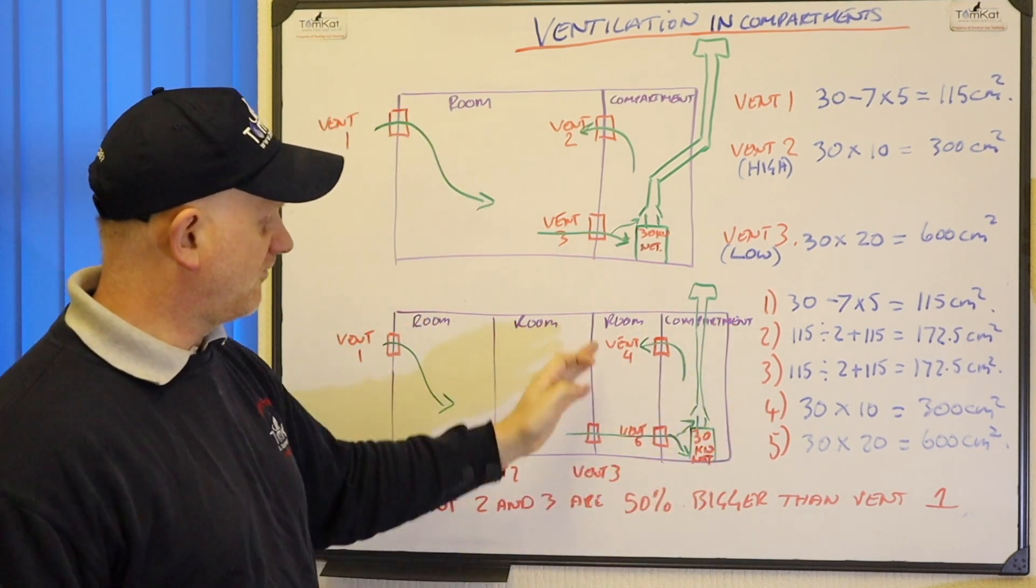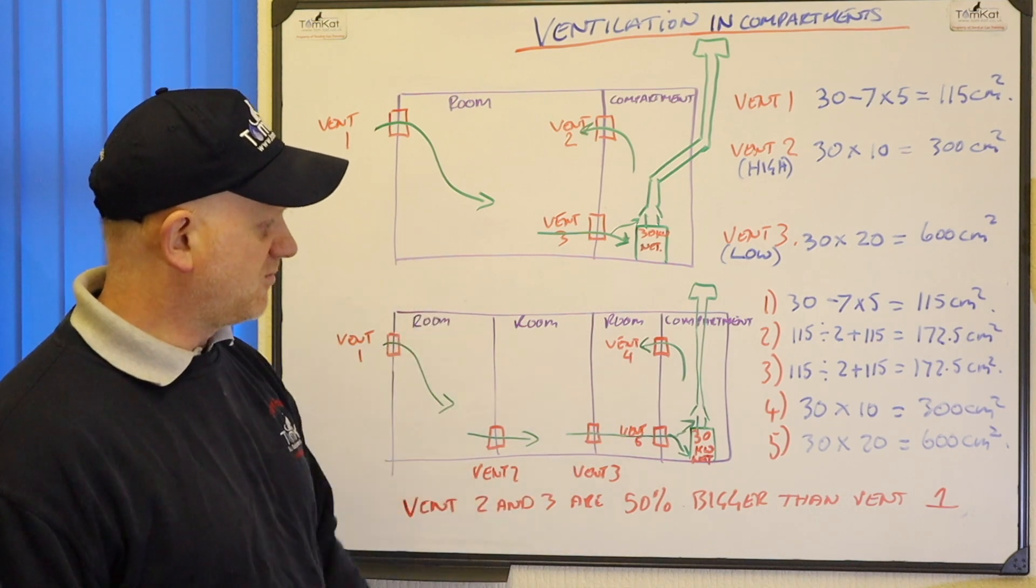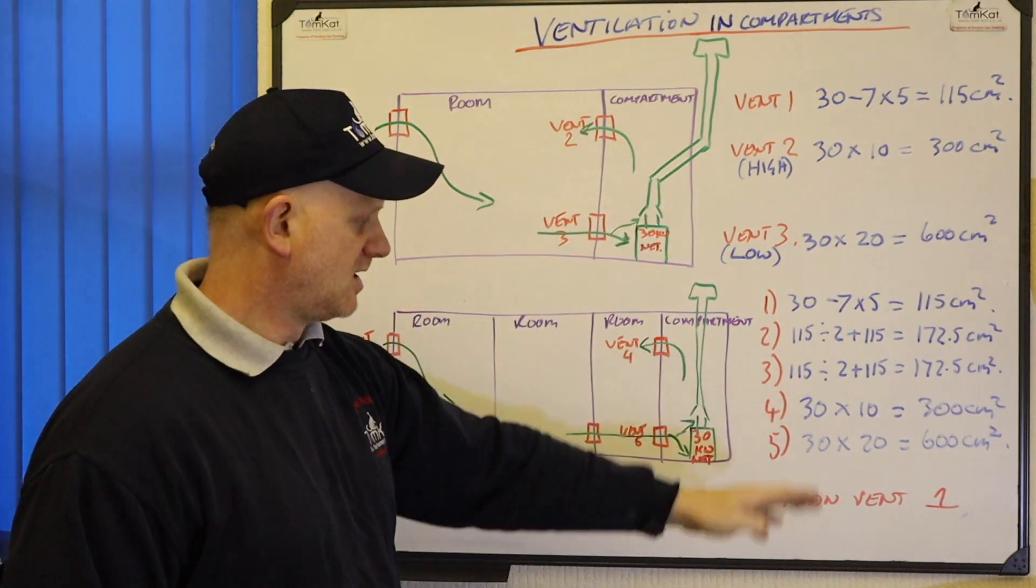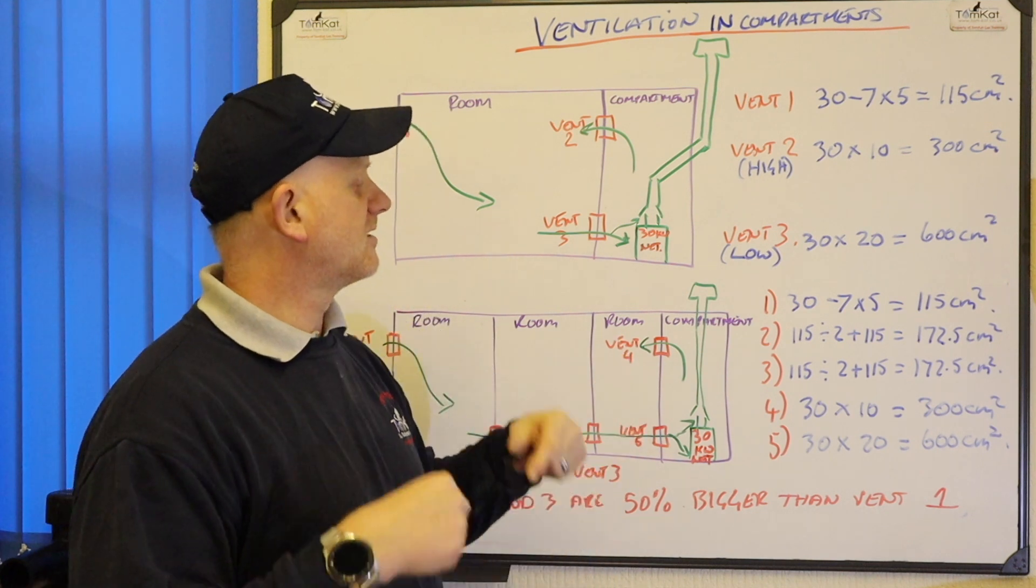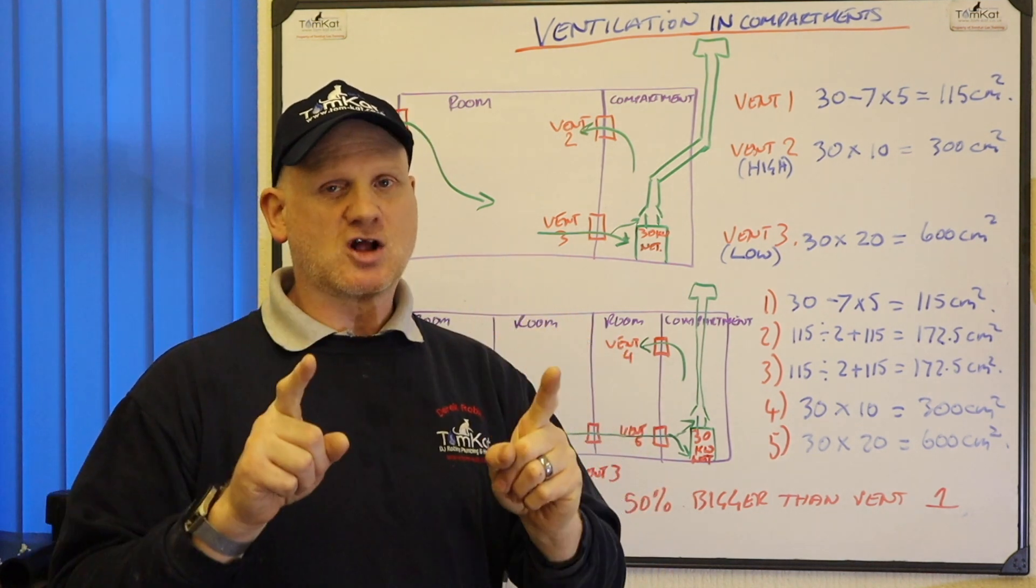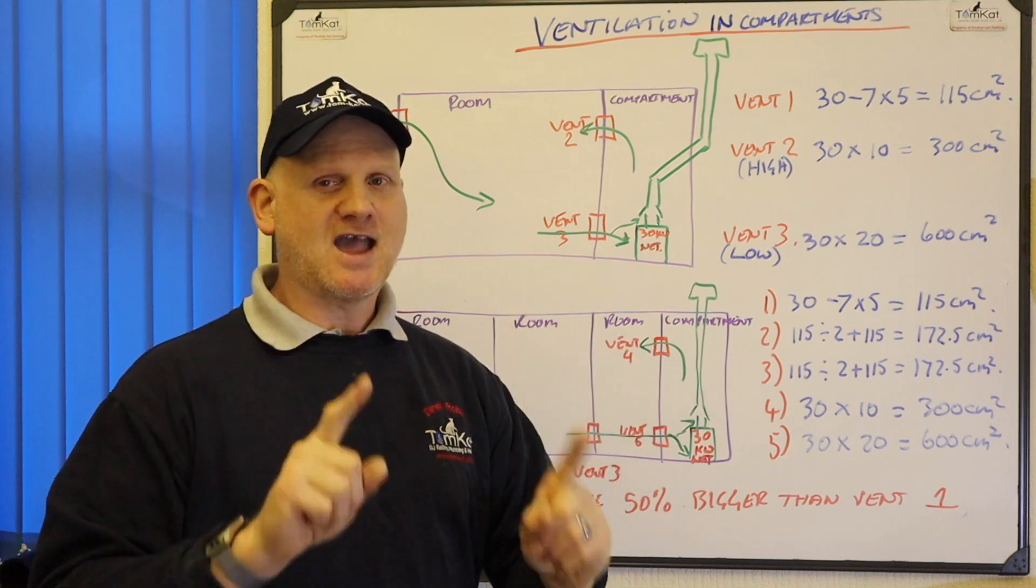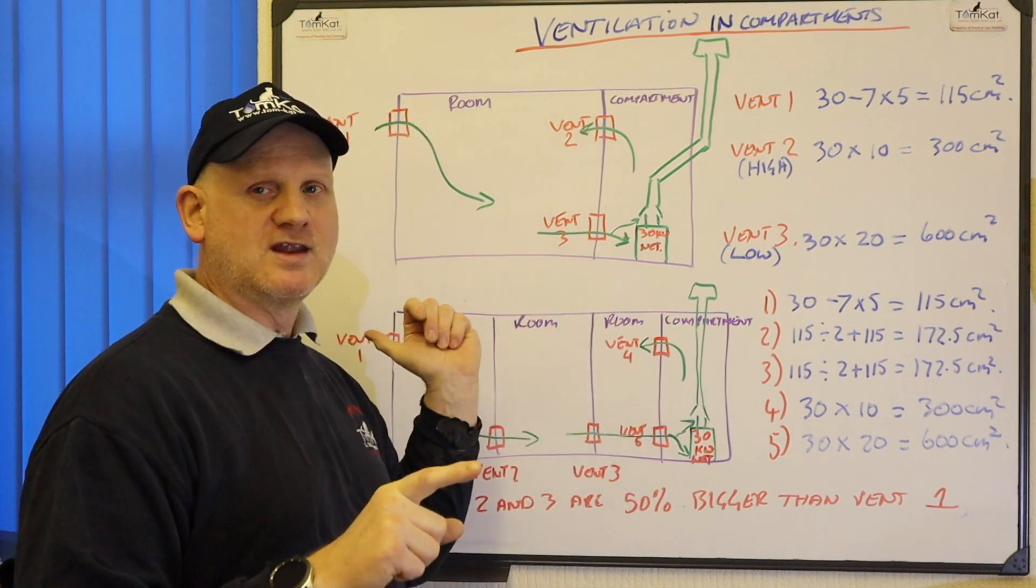And then vents 4 and 5, 4 being the high, 5 being the low, it's the same as above. We're just timesing it by 10 and 20. Pretty straightforward. So that's open flue appliances installed in the compartment taking the air from within a room. Let's have a look and see when they're taking it directly from outside.